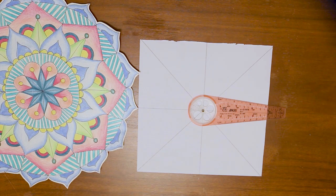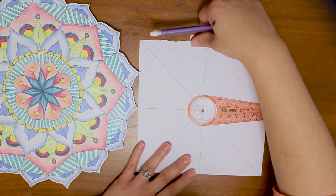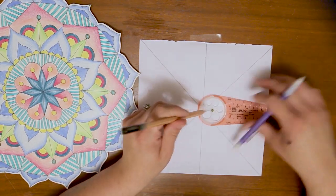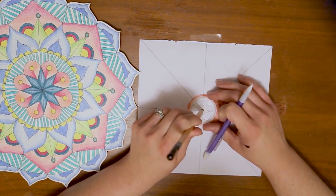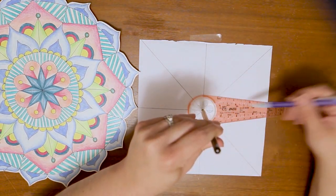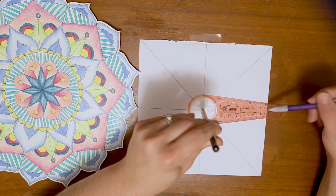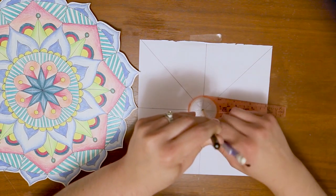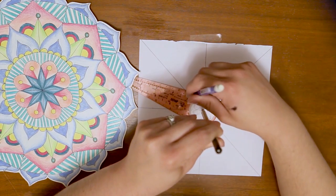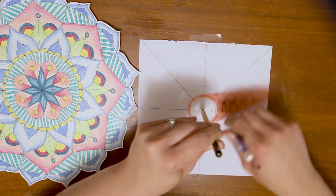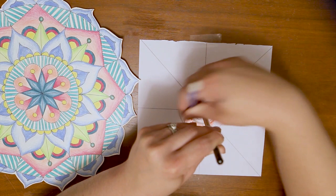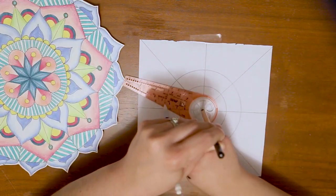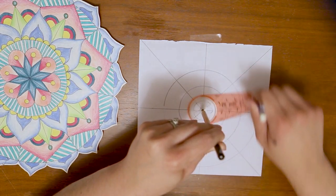For this compass, my paper likes to move around a lot when I'm using it, so I'm going to tape down my piece of paper here. It's important that I line up my compass here where all those points intersect at the middle of my piece of paper. I'm going to put one of my pencils here, and then now I'm going to put my other pencil in these little holes that go along the edge of my compass here, and I'm going to make some different sized circles. For a piece of paper this size, I'm probably going to only make three to five circles. If I was using a larger piece of paper, I would probably make more circles. So there's two circles, three, and four.